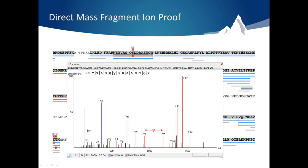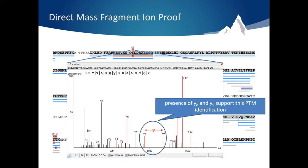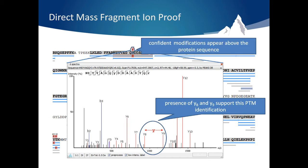PEAKS also has the ability to assign PTM confidence based on direct fragment ion proof. So if the MS-MS spectrum shows fragmentation before and after the proposed modification site and is above 5% relative intensity, it is considered confidently modified. In either case, if the PTM is considered confident, it will appear above the protein sequence.